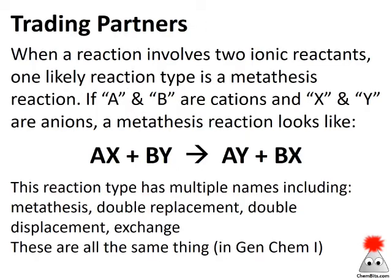Metathesis reactions are partner swaps. So if I've got two ionic substances, a metathesis is just trading partners. If I've got salt AX where A is a cation and X is an anion, and salt BY where B is a cation and Y is an anion, then a metathesis reaction just swaps partners — so A ends up with Y and B ends up with X.